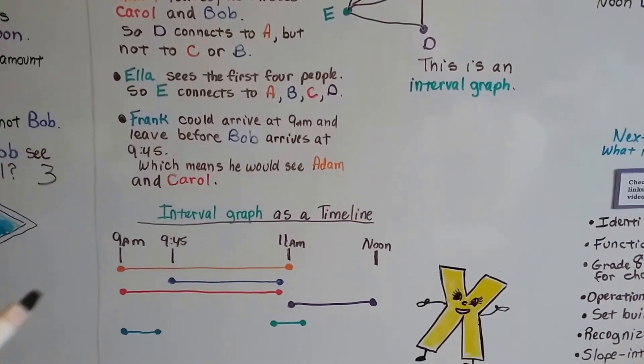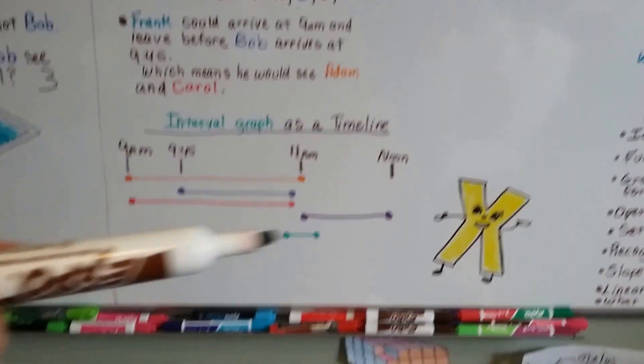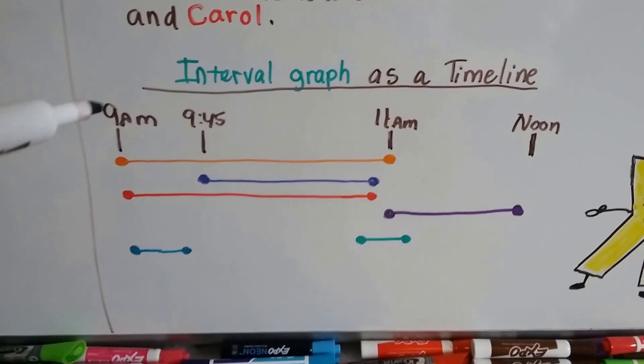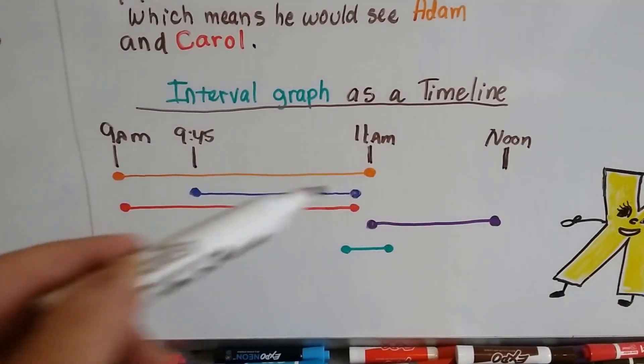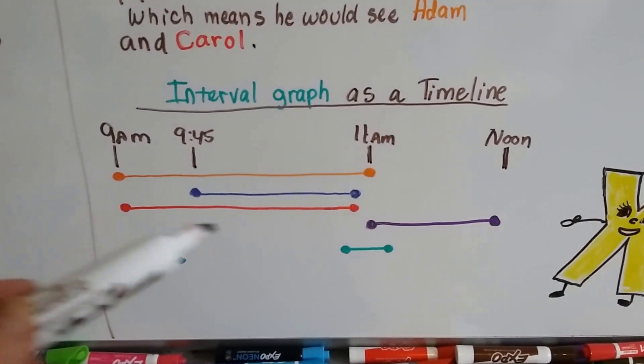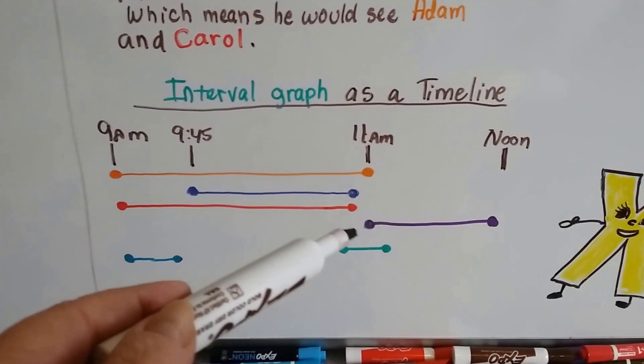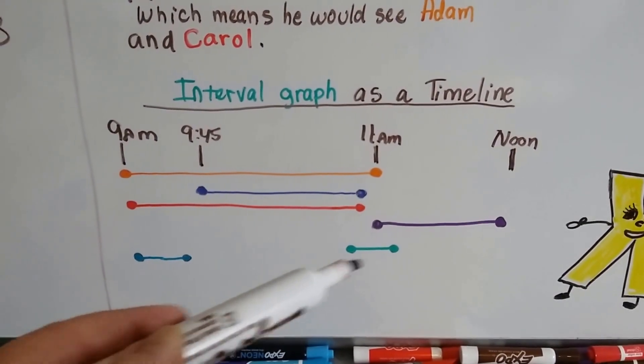If we made it as a timeline, we could see here's Adam in the orange, Bob in the blue, Carol in the red, Dave in the purple, Ella in the green.